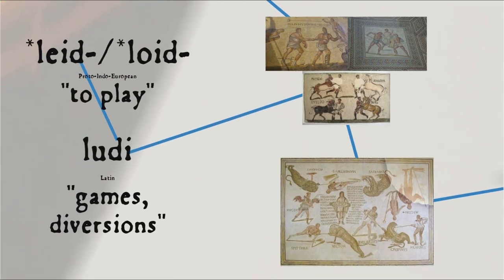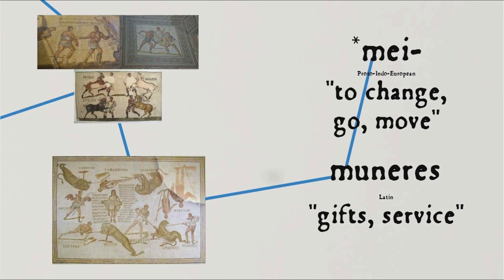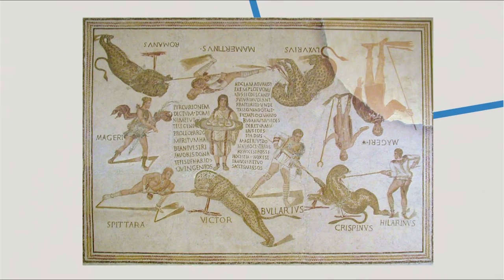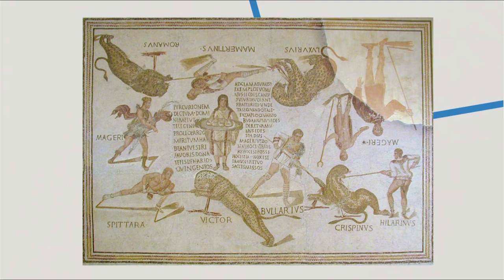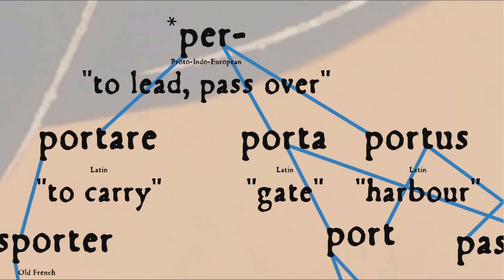In Latin, sports were referred to as ludi — games, diversions — from which we get the word ludicrous, from the root lud, to play. Or as muneres — gifts or service — from the root mue, to change or move, because the games were generally put on by a rich benefactor, often nominally to honour a dead relative, but really to increase the status and prestige of the benefactor. Now, the Latin verb portare — to carry, from Proto-Indo-European root per, to lead or pass over — is related to the Latin nouns porta, gate, and portus, port or harbour, from the notion of passage. And from them we get the English word port, both in the sense of portal, door, gate, and harbour.